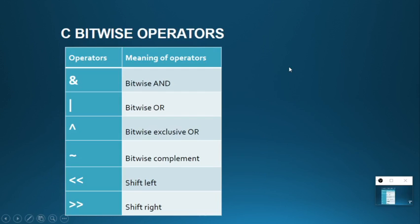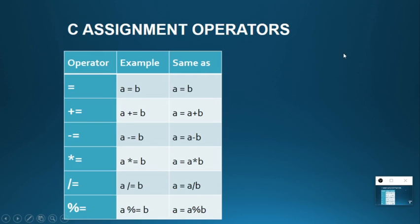Bitwise operators contain six operators: bitwise AND, bitwise OR, bitwise exclusive OR (XOR), bitwise complement (negation), shift left, and shift right. There is also the assignment operator which uses equals to (=). We can also combine arithmetic operators with assignment operators, such as +=, -=, *=, /=, and %= (modulo equal to).